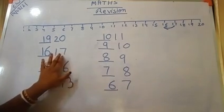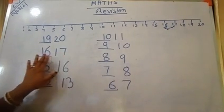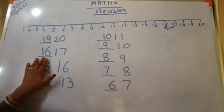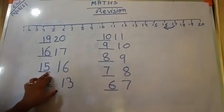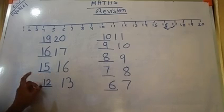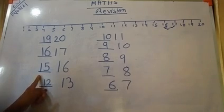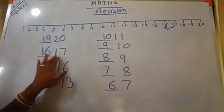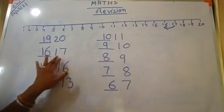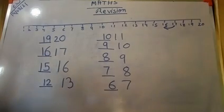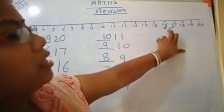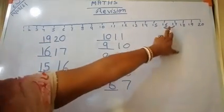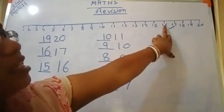Here it is 17. 17's before number will be 16. 16 before number will be 15. Because this 17 — before number is 16. 16 is the front number of 17, and it is called the before number.